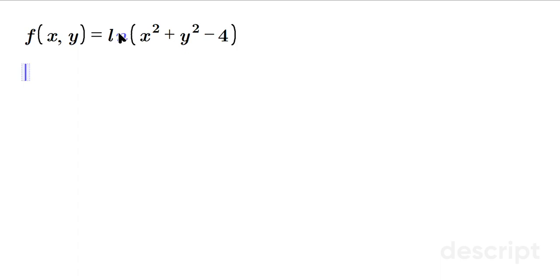So first, because we have the ln function, we have to say x² + y² minus 4. This has to be strictly greater than 0, which means x² + y² has to be strictly greater than positive 4.